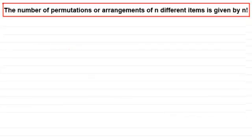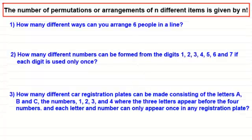Now, you should be able to see that the number of permutations or arrangements of n different items is given by n factorial. Now, I've got three questions here which I'd strongly encourage you to have a go at. Especially number three. It's slightly different. It builds on this concept.